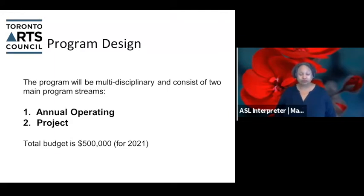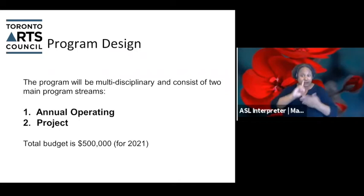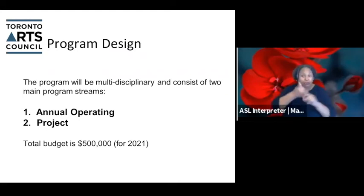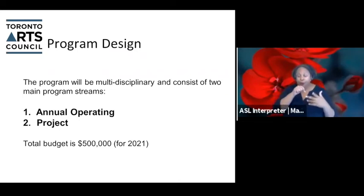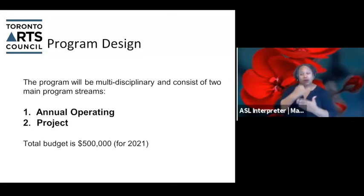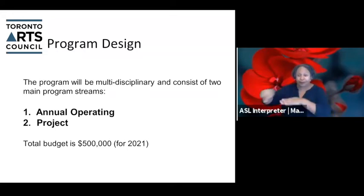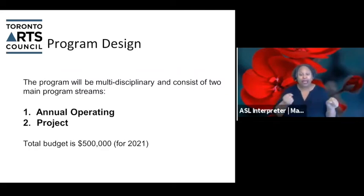Generally speaking, the program design will be available to artists, arts workers, and arts organizations of various disciplines. It'll consist of two main program streams: annual operating and project. The total budget for both would be $500,000 for 2021.